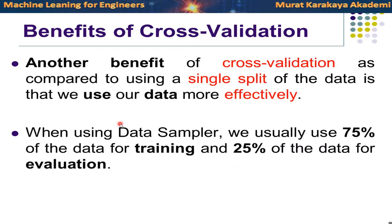Another benefit of cross-validation compared to a single split is that we use our data more effectively. In data sampler we typically use 80/20, 75/25, or 70/30 splits, meaning we use only a fraction of the dataset for training. We know that if we have more data in training, our model can learn the rules and patterns better. We would like to use all data as training data if possible, but we need a test set too — and the test set shouldn't be too small, otherwise we can't be sure about the generalization power.